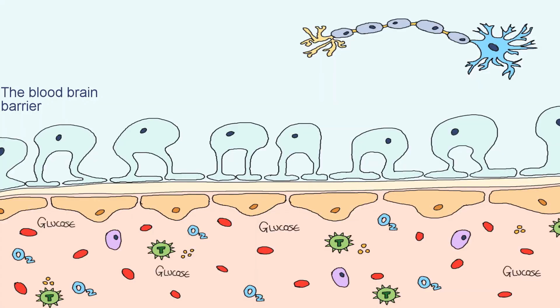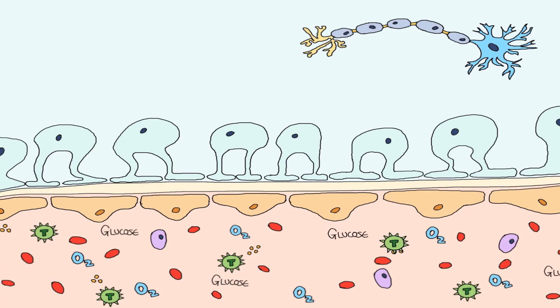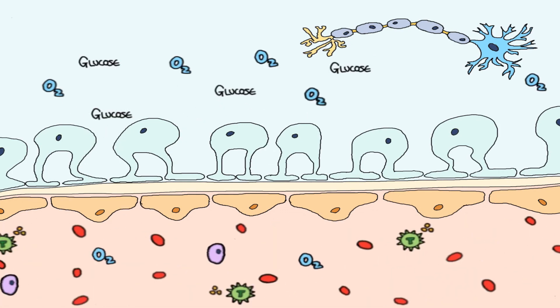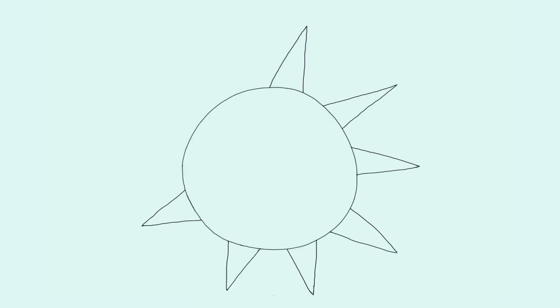The key step is the reduced function of the blood-brain barrier. The blood-brain barrier is a bit like a net, letting in the things the brain needs from the blood, but protecting it from the components that would not be suitable for it.